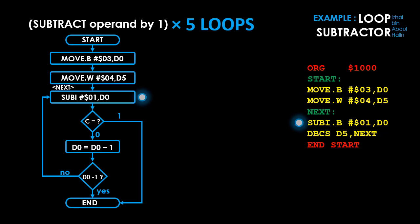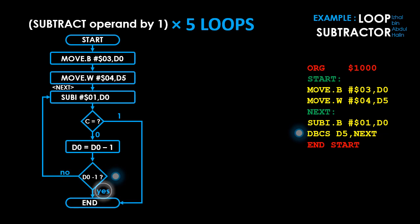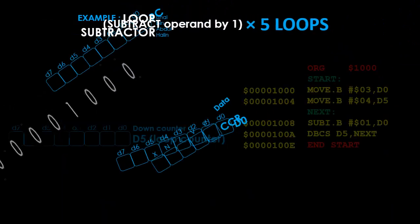The next instruction subtracts 1 from D0 and is attached to label NEXT. Note that it can change the C flag to 1 if a borrow is required for the subtract instruction. Following this is the DBCS D5 comma NEXT instruction. It checks the C flag. If C equals 0, D5 is decremented by 1 and checked against negative 1. If not equal, a branch back to label NEXT is executed. If the C flag is set to 1 by the subtract instruction before the loop completes 5 times, the program ends early.